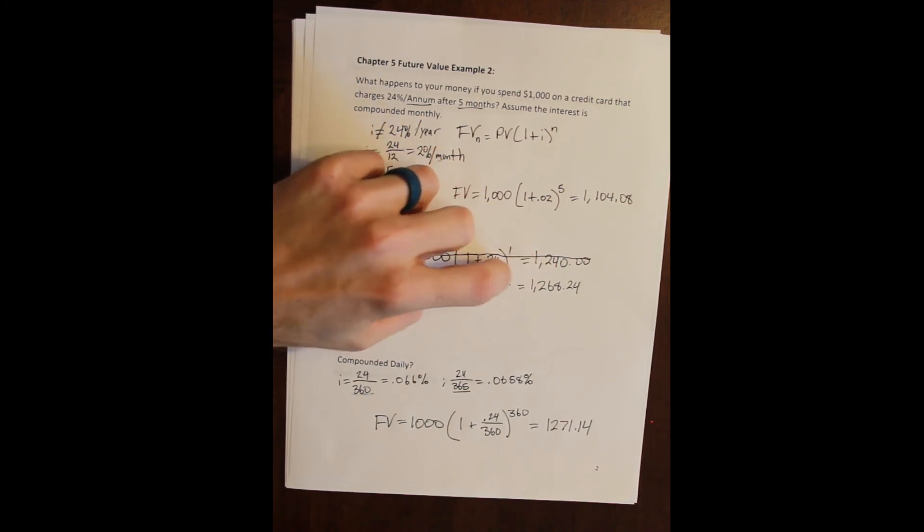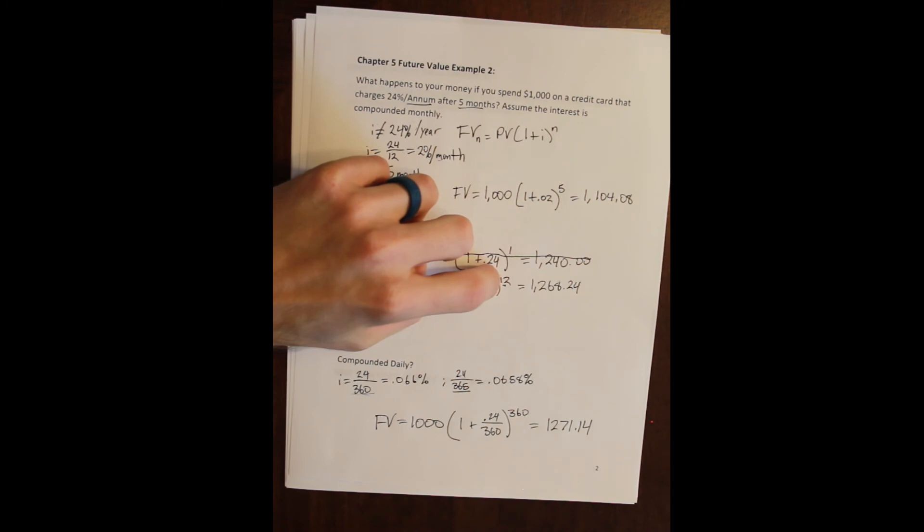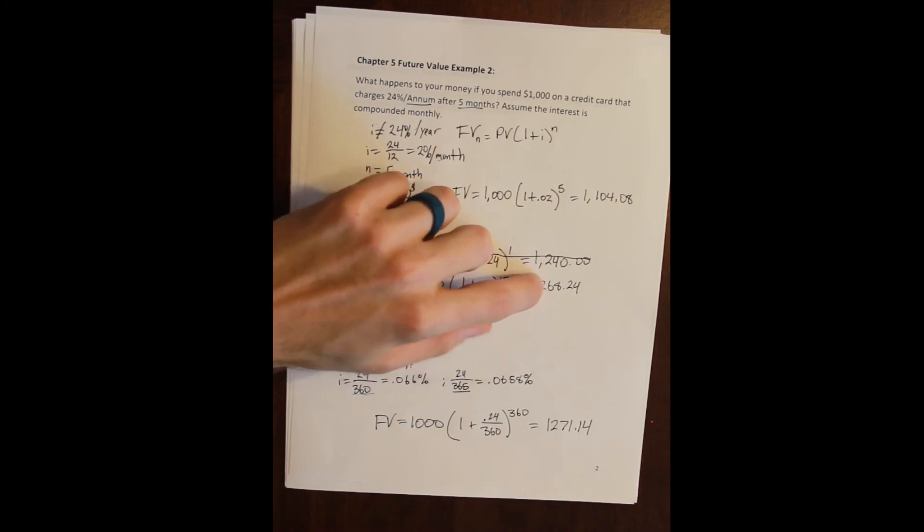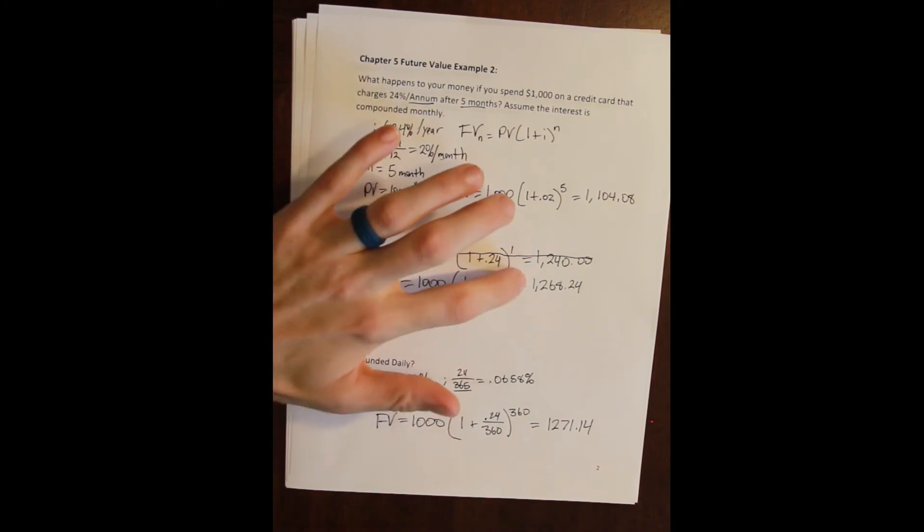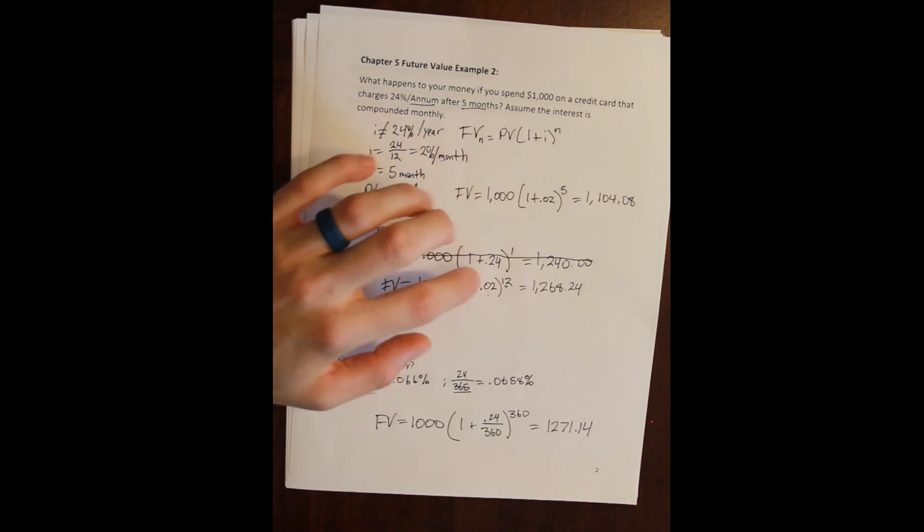If we compound monthly, so we increase the compounding periods by 11, we owe an additional 28, almost 30 in additional interest. So that's fairly significant, that's a couple of percent of the total amount that we owe. So that's a fairly significant increase.